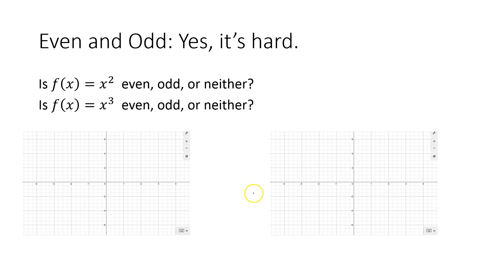First, let's look at it graphically, and then we'll look at it from the plugging in the negative x side of things. Graphically, not that bad. Even means that you have y-axis symmetry. Odd means that you have origin symmetry — that's the pinwheel symmetry where you can spin it around the graph 180 degrees around the origin, and it's back on itself.